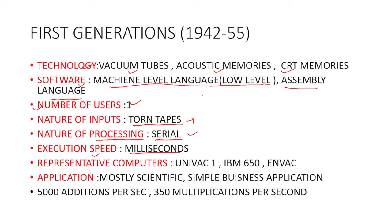Let me show you why it is called a vacuum tube. Inside a vacuum tube there is a diode. A diode has two electrodes — a cathode and an anode. When power is supplied to cathode and anode, they heat up. When the cathode heats up, it releases electrons.